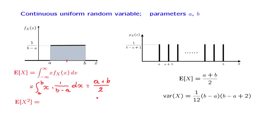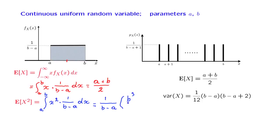We now continue with the calculation of the expected value of the square of the random variable. Using the expected value rule, this is the integral of x squared times the density, and because of the same argument as before, we only need to integrate from a to b. We can evaluate this integral, and the answer turns out to be 1 over b minus a times b cubed over 3 minus a cubed over 3. The reason these cubic terms appear is that the integral of x squared is x cubed divided by 3.